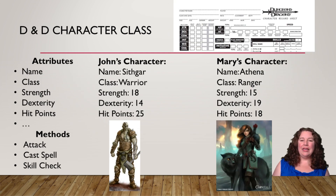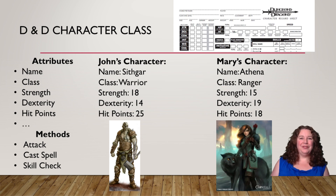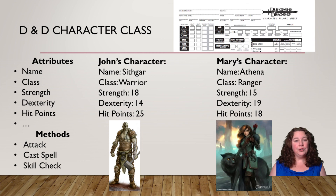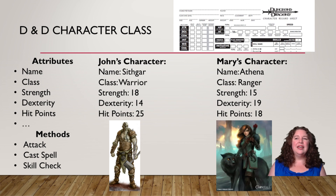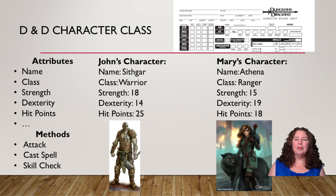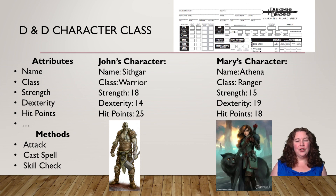I always like to throw this one in there in case anybody has ever played D&D. D&D is a role-playing game where you create a new character. Your characters have attributes the same way that our object classes do — name, class, strength, dexterity, hit points. Your character then has methods like attack, cast spell, or check skill. These are methods or functions that you can attach to your class. So if I were to create a class for a D&D character, I could add all of these attributes and create all of these methods — create a new character and define the attributes and methods that go along with it.